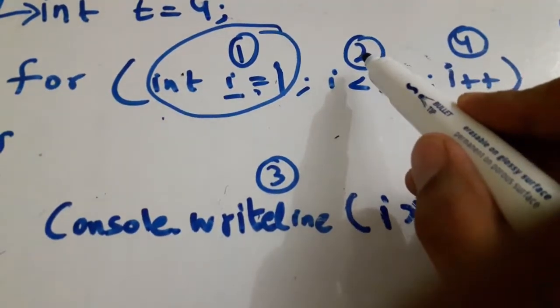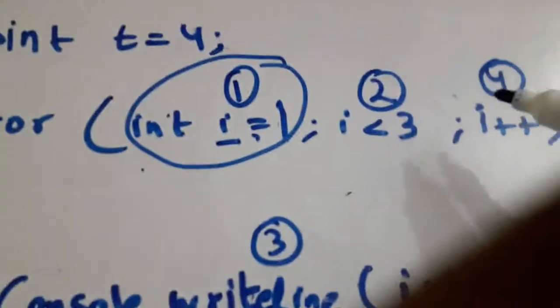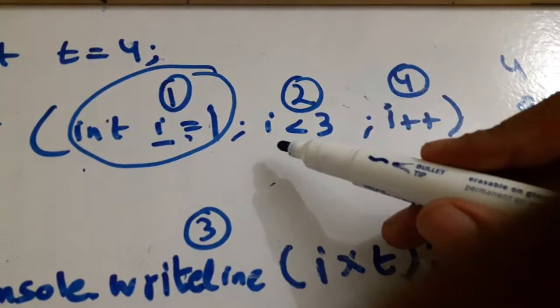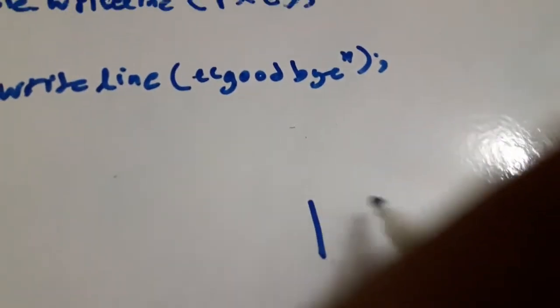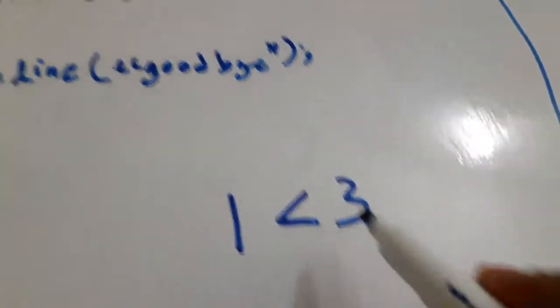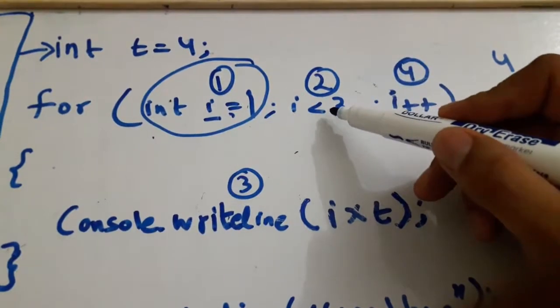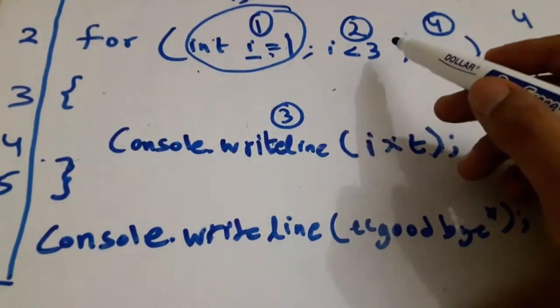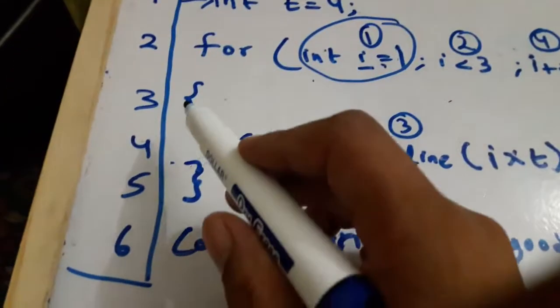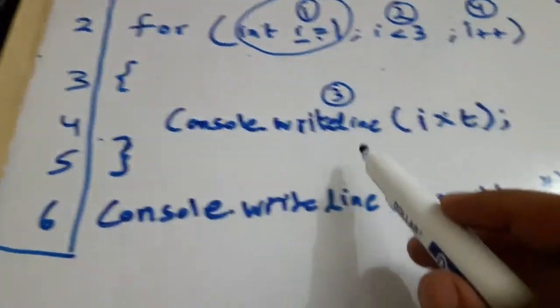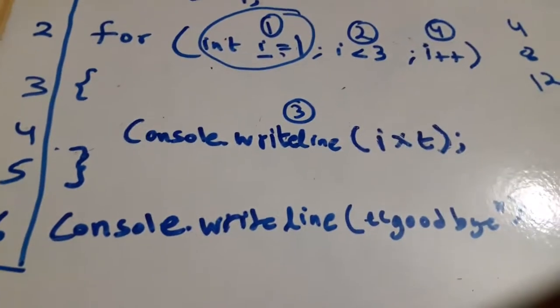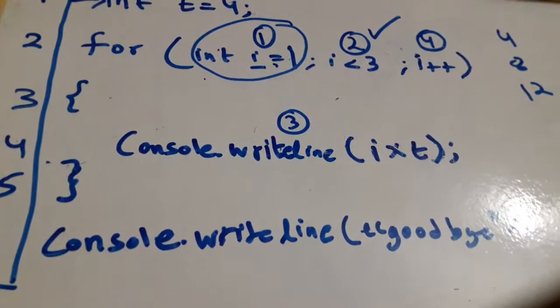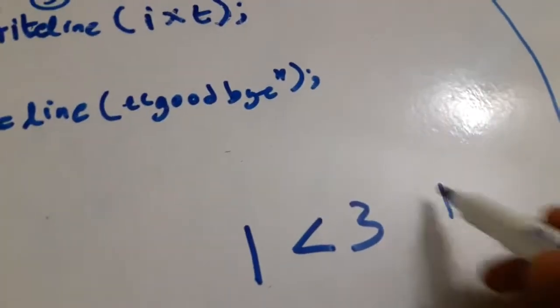After initialization, the program jumps to sequence number two — the condition check. It compares: i has a current value of one (we can see it in the memory diagram), so it checks: is one less than three? Yes, that is a true statement. The important point is that if this condition is true, it will go to sequence three and execute the loop body.